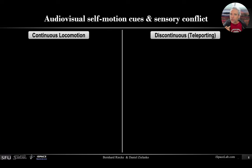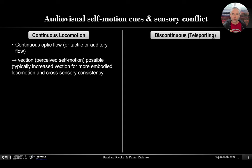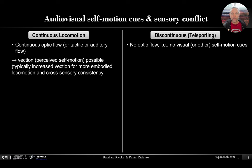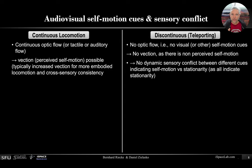Another example: audiovisual self-motion cues and sensory conflict. For continuous locomotion, we always have continuous optic flow, or sometimes even tactile and auditory flow. This means we can perceive vection — self-motion — which is stronger with more embodied locomotion interfaces and cross-sensory consistency. But for teleporting, there's no optic flow, because there are basically no self-motion cues. By definition, there cannot be vection. Which also means there's no dynamic sensory conflict between cues indicating self-motion and stationarity, because they all indicate stationarity.